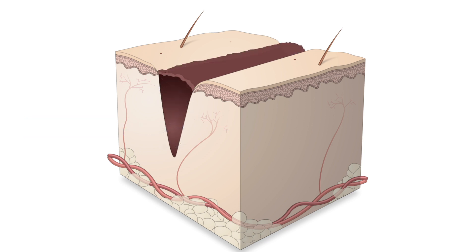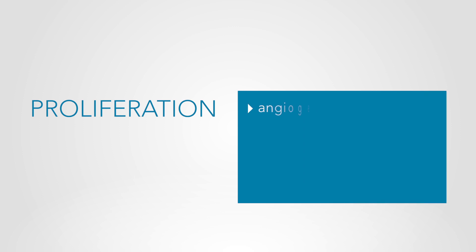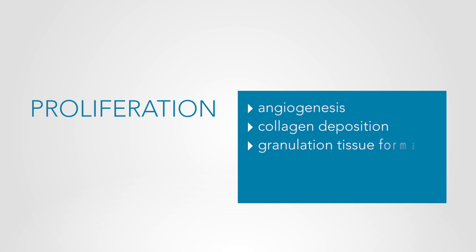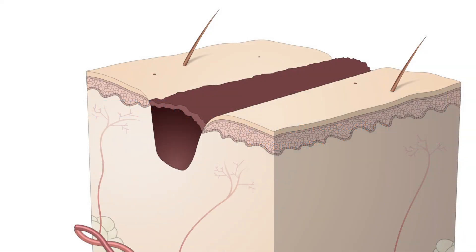Blood factors are released into the wound that cause the migration and division of cells during the proliferative phase. The proliferation phase is characterized by angiogenesis, collagen deposition, granulation tissue formation, epithelialization, and wound contraction. In angiogenesis, vascular endothelial cells form new blood vessels.